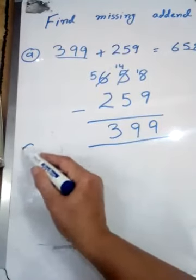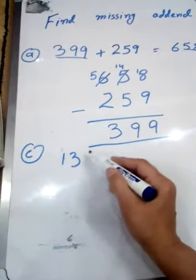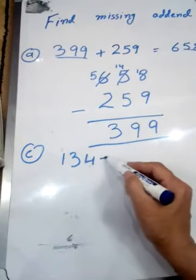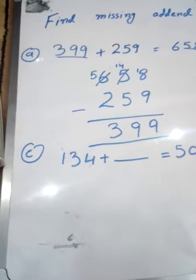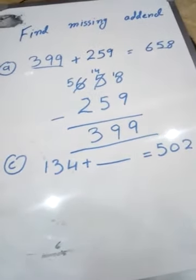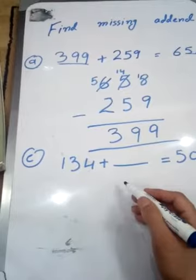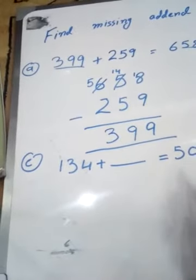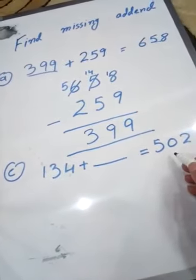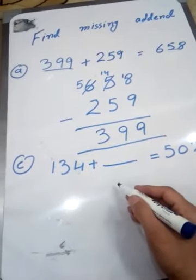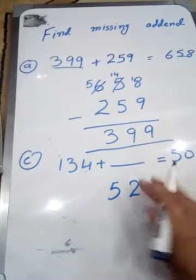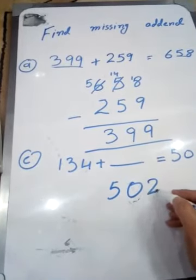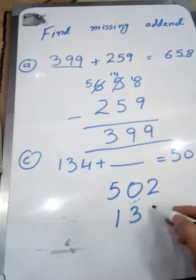Now here is an example also about the second addend, which is 134 plus blank equals 502. It is our part C. For this, we have to make a sum again as well. Write that sum on the top and the given number below. It is 502, 134, and subtract it.